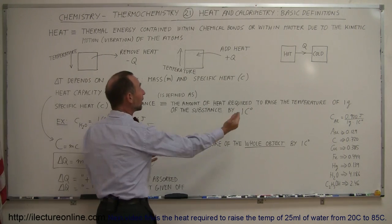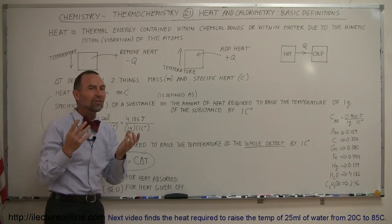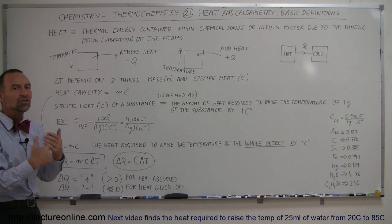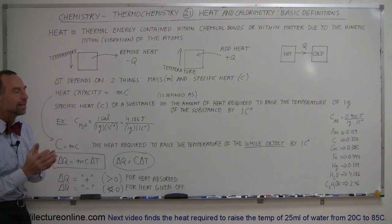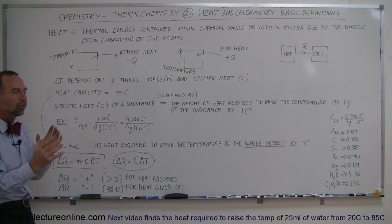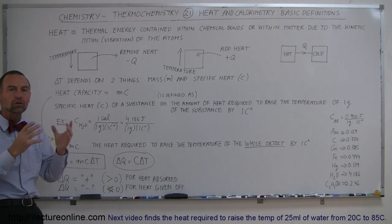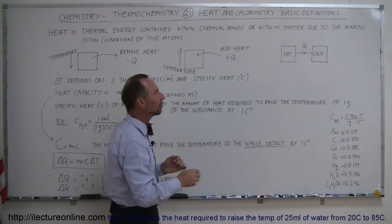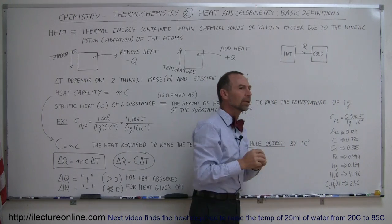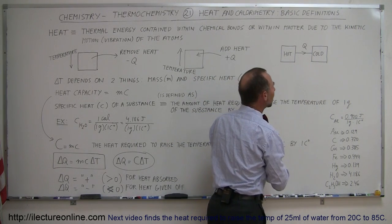If you add heat to the object, you will cause the temperature to rise. The temperature of an object is a measure of the kinetic energy state of the object. Temperature is actually a measurement of the relative hotness or coldness of an object. If you take two objects side by side and one is hotter than the other, that means the energy state of one is higher than the energy state of the other.